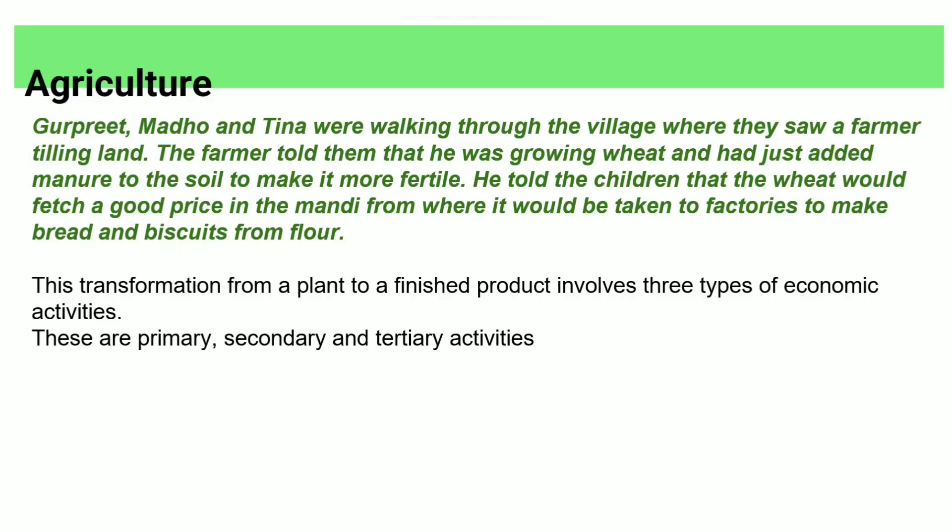Hi everyone, we are discussing in the class of agriculture. The first lesson is a story. Gurppis, Madhu and Tina were walking through the village and saw a farmer tilling land. The farmer told them he was growing wheat and had just added manure for soil fertility. He told the children that the wheat would fetch a good price and would be taken into factories to be made into biscuits.